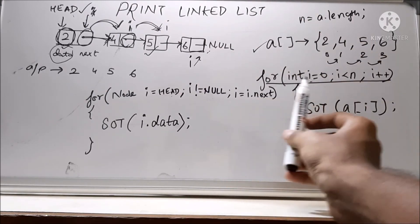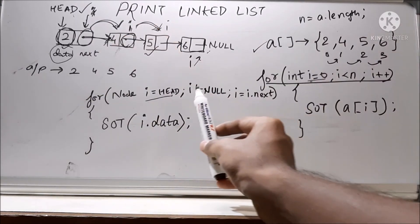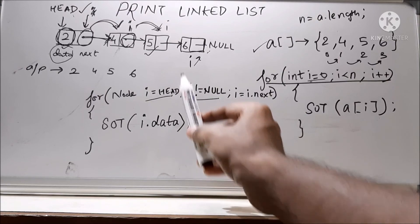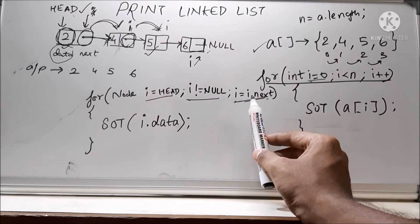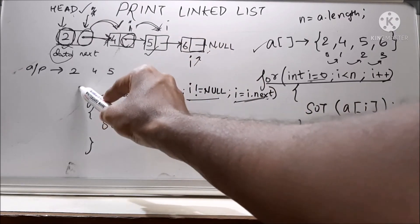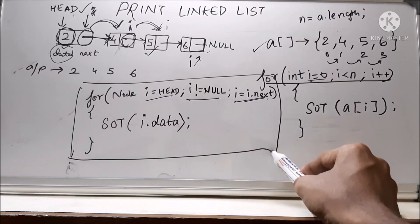So you can remember it by comparing it with the array. So both are basically same. We are going to start from i equal to zero here. Here we are going to start from head. We are going to check until i is not equal to null. We are going to move. And then this is the statement to make i to move from one location to another. So this same for loop you can try using a while loop.